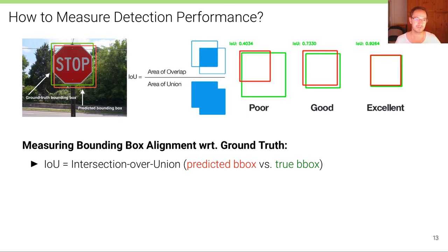The green box is the ground truth bounding box. This is the box that's annotated by the human annotator. This is the ground truth label. And the red box is the box that's predicted by the object detection algorithm.